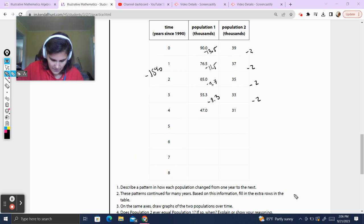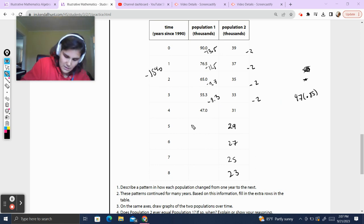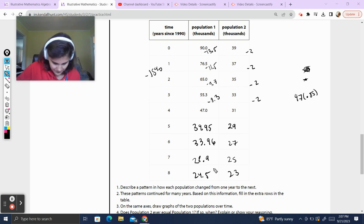The pattern continued for many years based on the information fill in the extra rows on the table. So this is going to be 29, 27, 25, 23. And then here, so minus 15% would be the same thing as our last value times 85%. So 47 times 85%. If I put it into my handy dandy calculator, which all of you should have ready to use for lessons like this, because we are mathematicians, it gives me 39.95. And I multiply that by 85%, and I get 33.96. And I multiply that by 85%, I'm going to get 28.9. And I multiply that by 0.85, and I get 24.5.